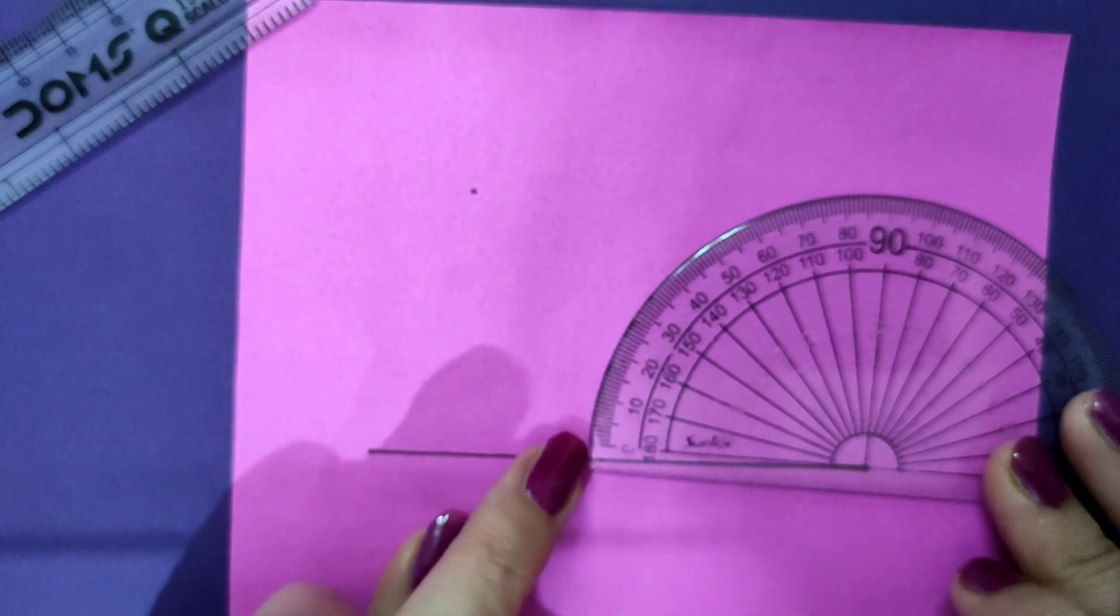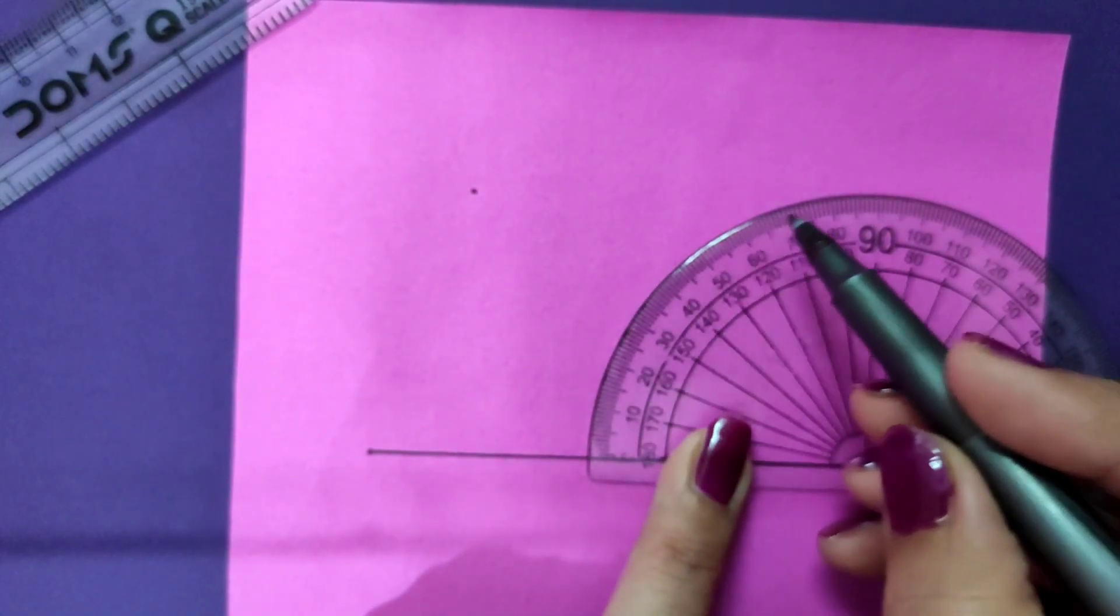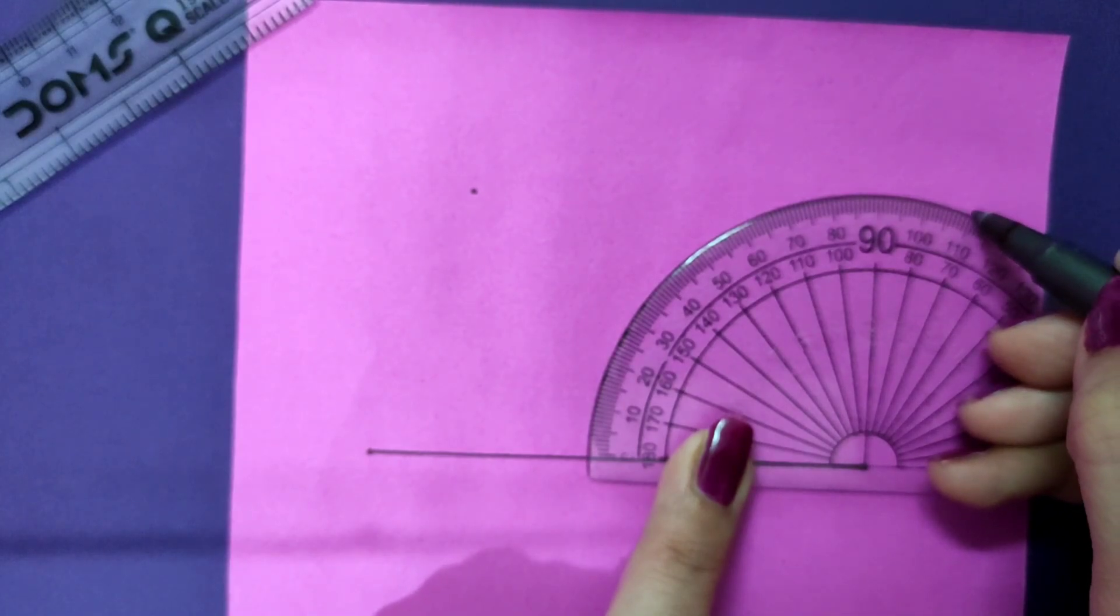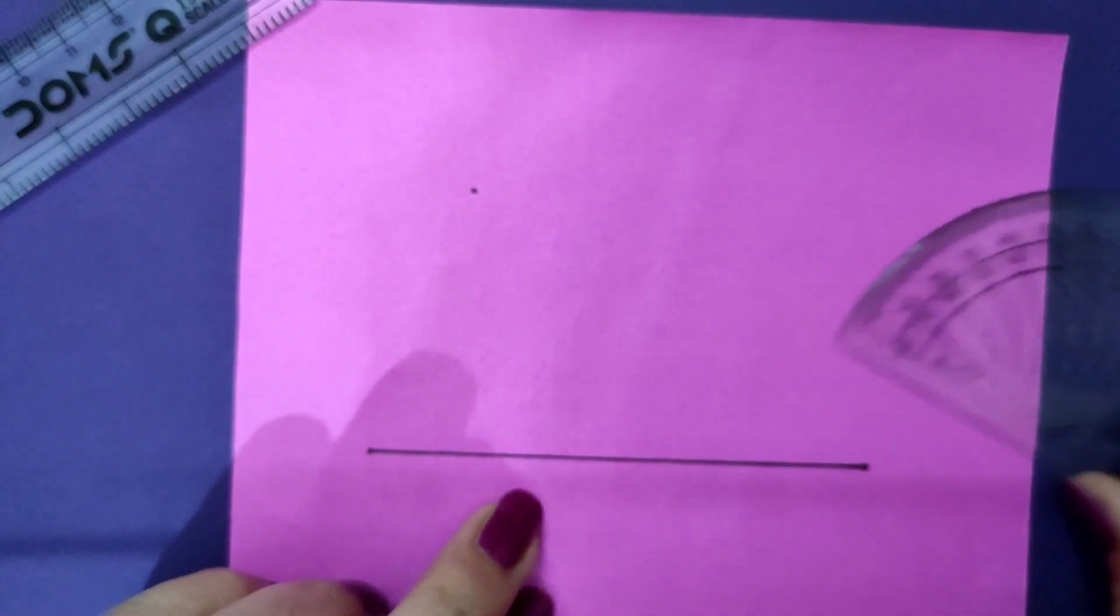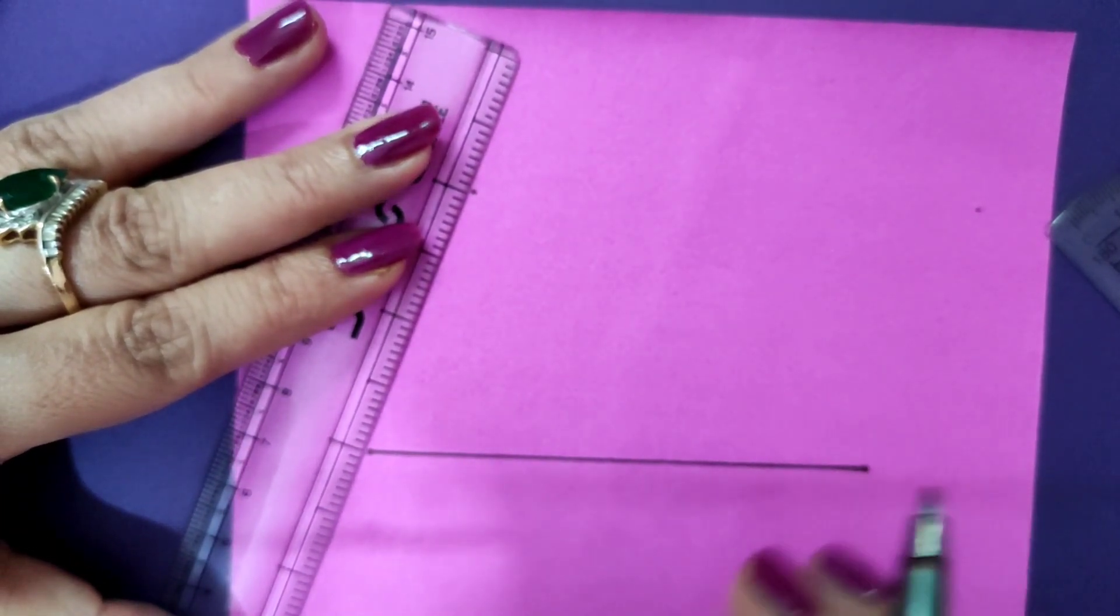Exactly the same way, I put the protractor at this point also and make a 110 degree angle here. Once I have made these angles of 110 degrees each, I just join them with the ruler.